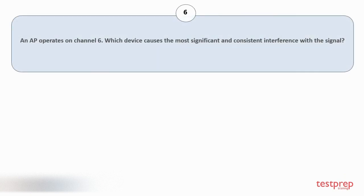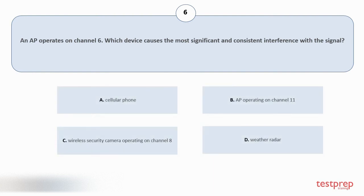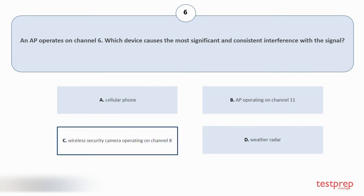Question number 6: An AP operates on channel 6. Which device causes the most significant and consistent interference with the signal? Option A: Cellular phone. Option B: AP operating on channel 11. Option C: Wireless security camera operating on channel 8. Option D: Weather radar. The correct answer is option C.